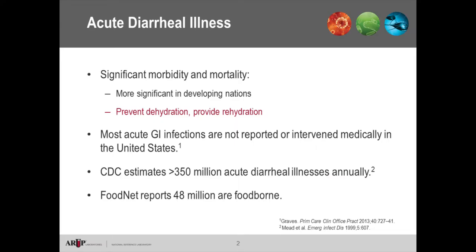Acute diarrheal illnesses are a significant cause of both morbidity and mortality. This is true in the United States, but much more so in developing countries. The primary focus for these illnesses is to prevent dehydration, and if dehydration does occur, to provide adequate and immediate rehydration. In the U.S., most GI infections are not seen by a medical professional — either because symptoms resolve quickly or due to delays in seeing a provider. The CDC estimates there are likely over 350 million acute cases of GI illness each year.